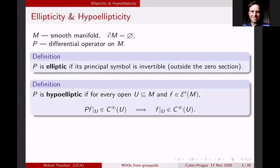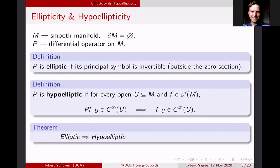The second important definition is hypo-ellipticity. P is hypo-elliptic if it satisfies this smoothness of solutions condition: if I have a distribution F and PF is a C∞ function, then F was already a C∞ function — and that's true on any open set. So it's basically saying that if a differential equation has a smooth right-hand side, then its solutions are smooth as well. There's a famous well-known theorem that elliptic operators are hypo-elliptic — this is one of the main properties of elliptic operators.